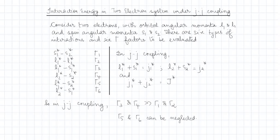Hello, good morning. In this lecture we will be discussing how to evaluate the interaction energy in a two-electron system under JJ coupling. Consider two electrons whose orbital angular momenta are respectively l1 and l2, and spin angular momenta are respectively s1 and s2.